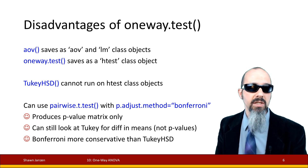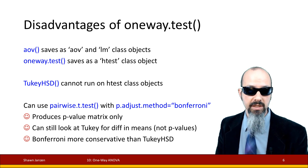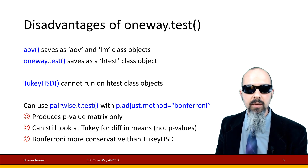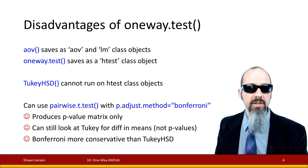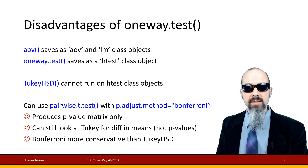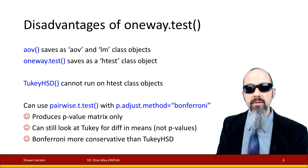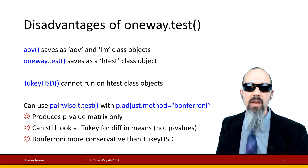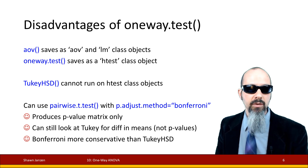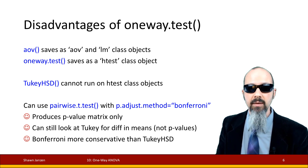That doesn't mean we're completely in the dark for post-hoc testing. We can still use another function called pairwise.t.test instead of TukeyHSD. It gives a slightly different output — a matrix of p-values — and you look at the intersection of each to determine which paired group differences were statistically significant. Inside pairwise.t.test we use the Bonferroni adjustment, which is another way to compensate for alpha inflation. It's more conservative than Tukey, so it's a little harder to get statistically significant p-values.